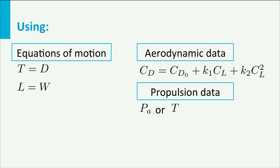if you are provided with two sets of data representing an aircraft: first, the aerodynamic characteristics of an aircraft in the form of a lift-drag polar, and second the basic propulsion system characteristics in terms of thrust or power available as a function of airspeed.